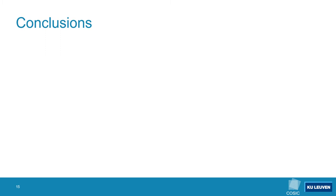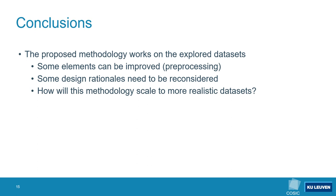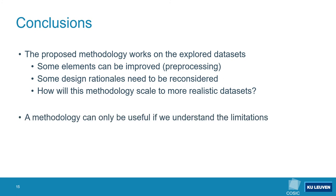Gabriel Zaid and his co-authors provided us with a starting point for a generalized methodology and made their implementations available online. Thanks to these publicly available implementations, we were able to independently reproduce their experiments. The networks proposed in their work do work well on all of the explored datasets. However, our experiments show that some elements, such as the first convolutional block, can be improved upon, and that some of the design guidelines must be reconsidered. An open question which remains is how this methodology will scale to more realistic datasets in which traces longer than a few thousand samples are considered. We believe that having a network design methodology can only be useful if we also understand the limitations of the approach.